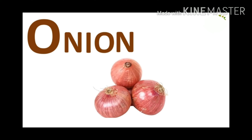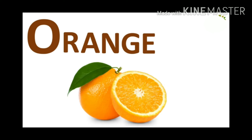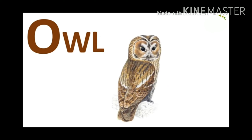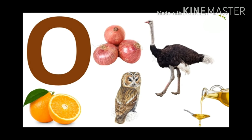After N, letter O. This is the letter O. O for Onion. O for Ostrich. O for Orange. O for Owl. O for Oil. Therefore, letter O has the sound O.